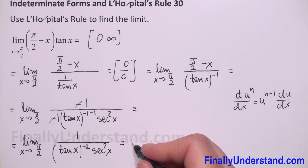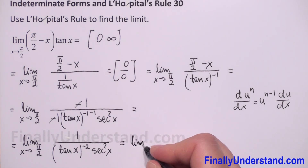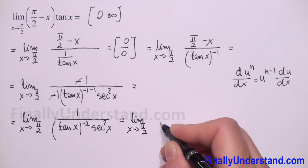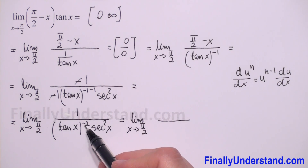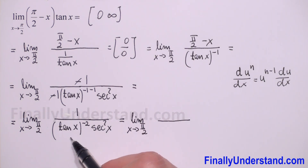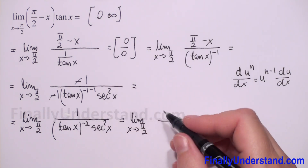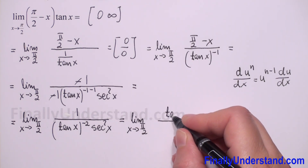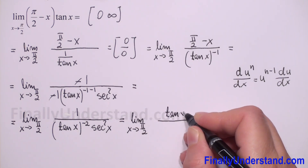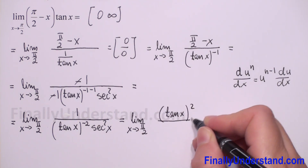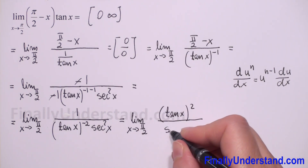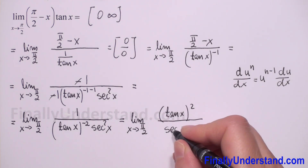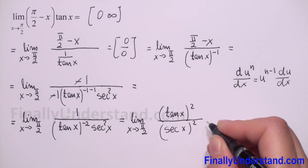This is equal to the limit as x approaches pi over 2. Because we have a negative exponent, we can bring tangent of x to the numerator. So we will have tangent squared of x over secant squared of x.